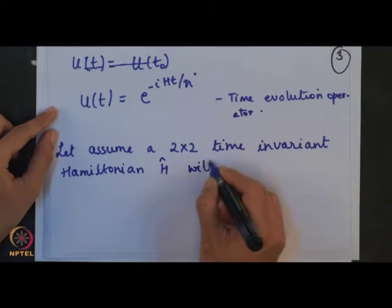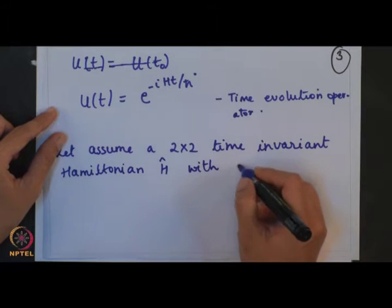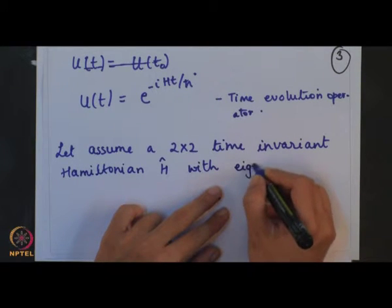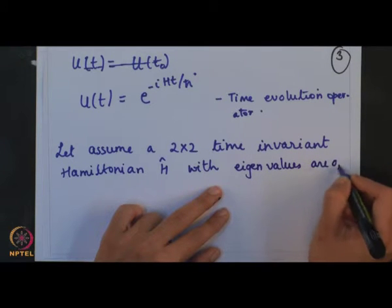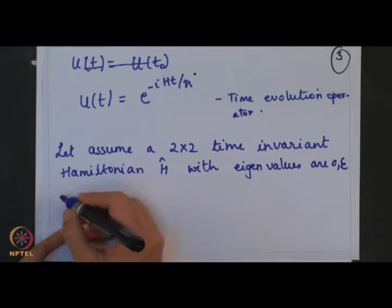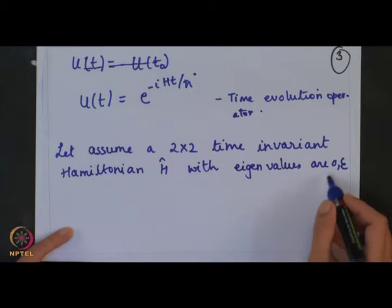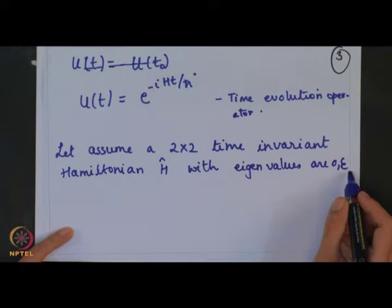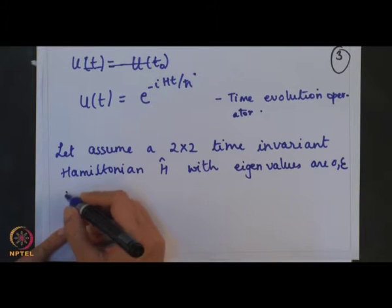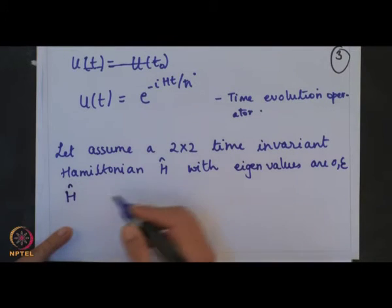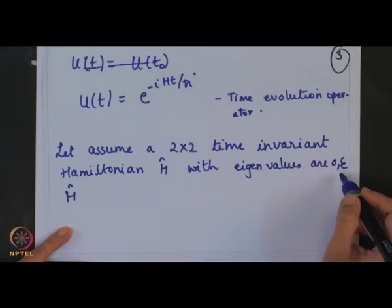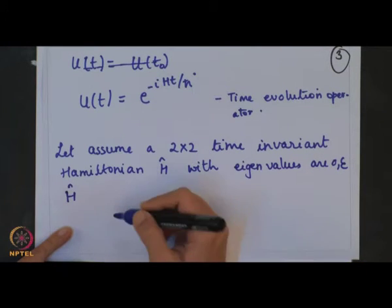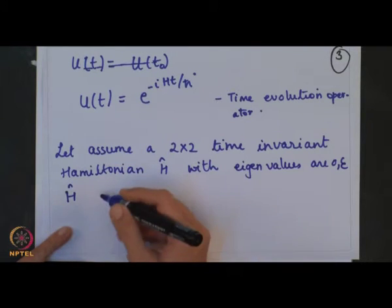Let us assume a 2×2 time-invariant Hamiltonian with eigenvalues 0 and E. These 0 and E correspond to the energy eigenvalues. The Hamiltonian operator with eigenvalue 0 can be taken as the global phase, which is invariant under such a measurement and will be immaterial.